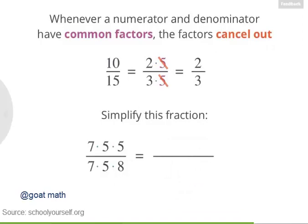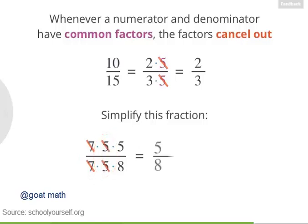Nicely done. First, you can cancel out the 7s in the numerator and the denominator. Then, you can cancel out one of the 5s up here with the 5 down here. And that leaves you with 5 eighths, the simplified fraction.